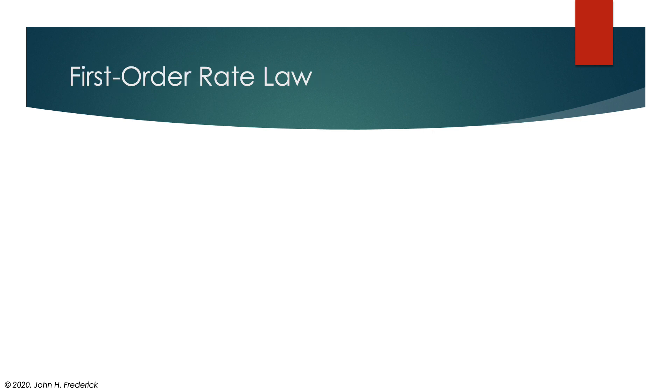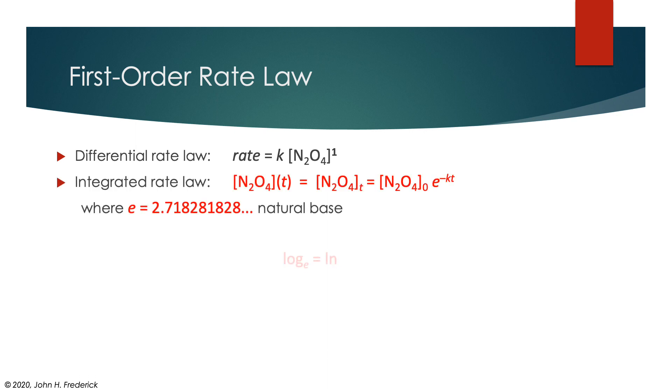What does this look like for the first order rate process? Our differential rate law would look like this. When we actually solve this mathematically, we get an integrated rate law that looks like this, where the concentration of N₂O₄ at some time t—and you'll see that I've written that two different ways, one is a function of t and one with the subscript t, just to indicate that these are trying to indicate the same quantity—that concentration at time t is going to be equal to the initial concentration at time zero times this strange thing, e^(-kt).